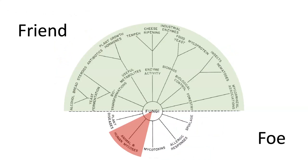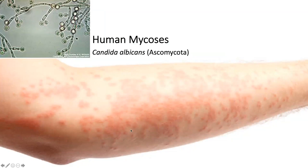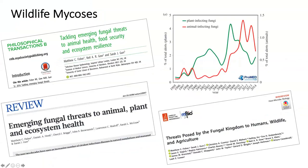A few fungi have even changed the course of human society, like Penicillium species. However, some taxa cause disease in humans, plants, and animals when conditions are right — and these are called mycoses. A lot of us might be more familiar with the skin mycoses of humans caused by common species such as our commensal Candida albicans, which is responsible for candidiasis in humans under certain conditions when a human's immune system is affected — for example, infants or the elderly, cancer or AIDS patients, or even transplant recipients.